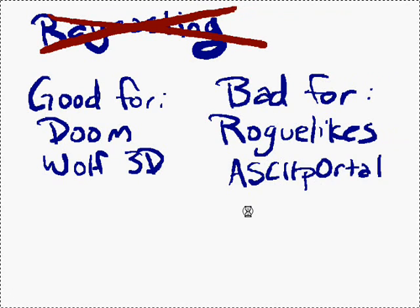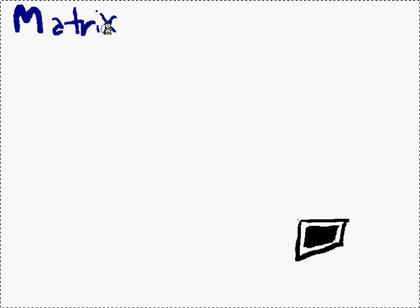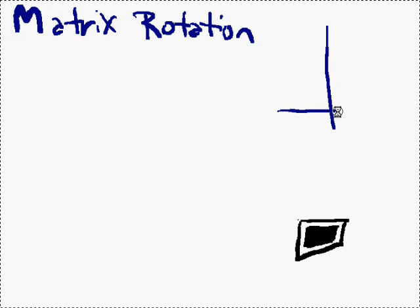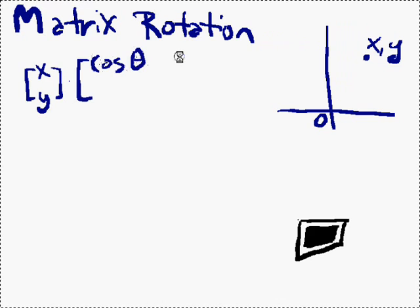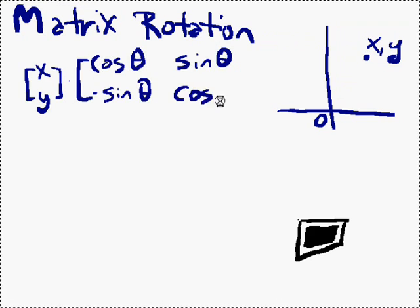Now for ASCII Portal's view, I ended up having to review for myself two mathematical concepts in order to make it work. The more complicated of the two was matrix rotation. Matrix rotation is taking the x and y point that you want to rotate by and multiplying it by the two-by-two matrix: cosine theta, sine theta, negative sine theta, cosine theta.